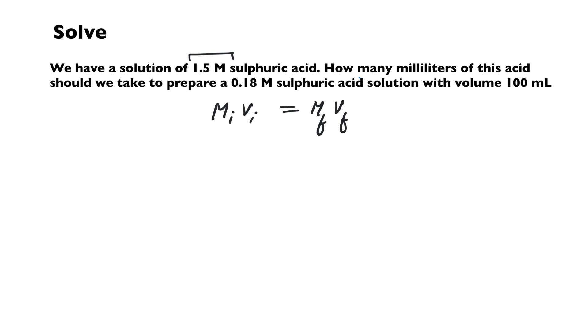So how many milliliters of this acid? M initial is 1.5, we do not know the V initial that we must take so that we have an M final of 0.18 and the volume should be 100. So V initial that you require is 0.18 times 100 upon 1.5. Again, if you do the maths it comes around 12 ml. So you see it's pretty simple.